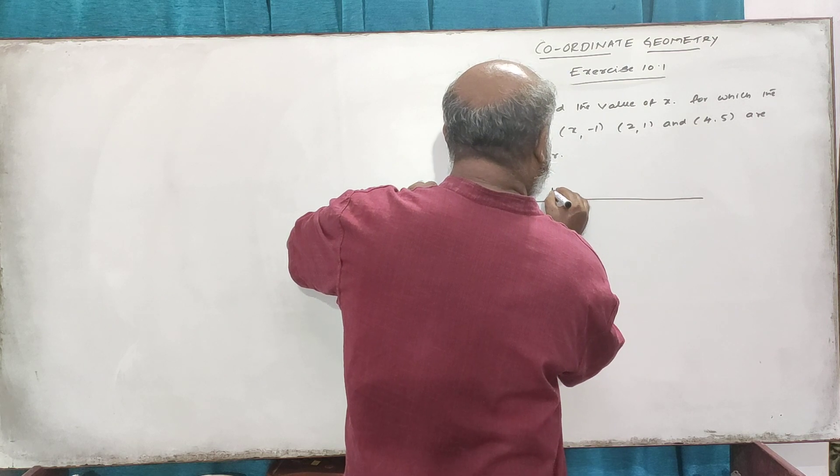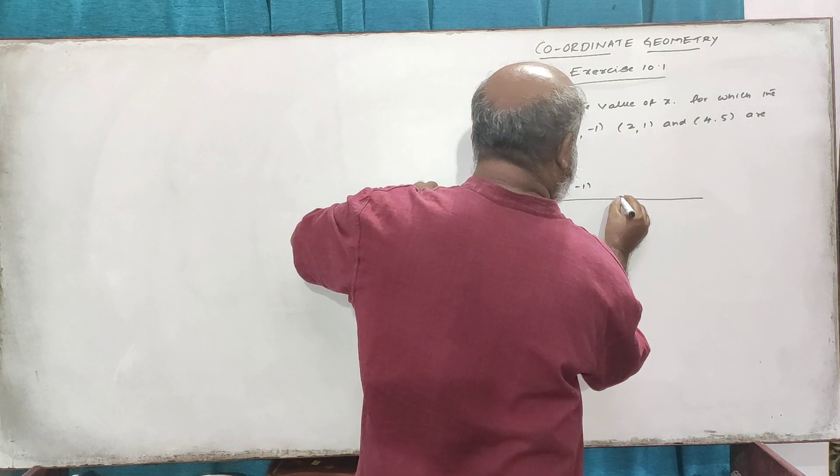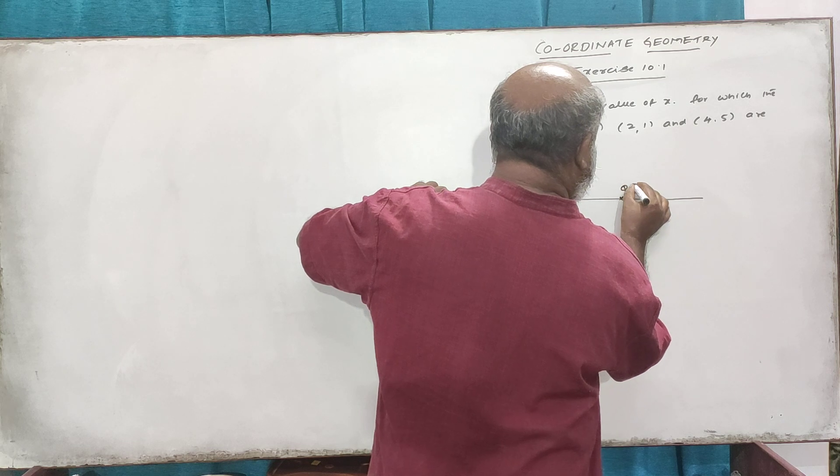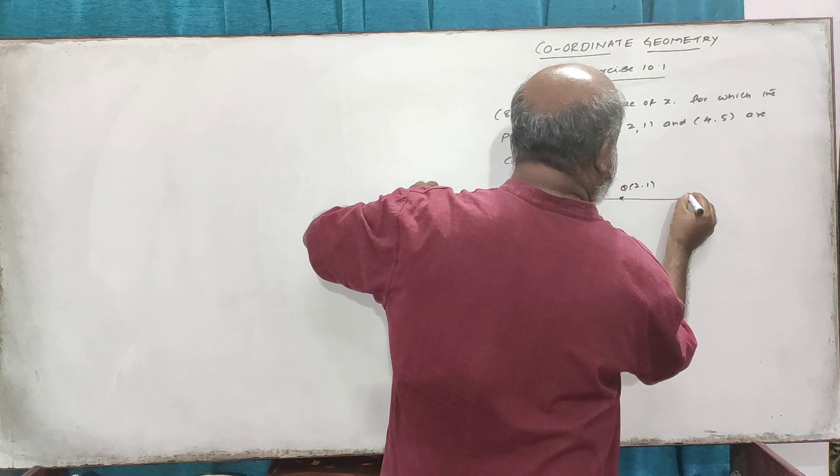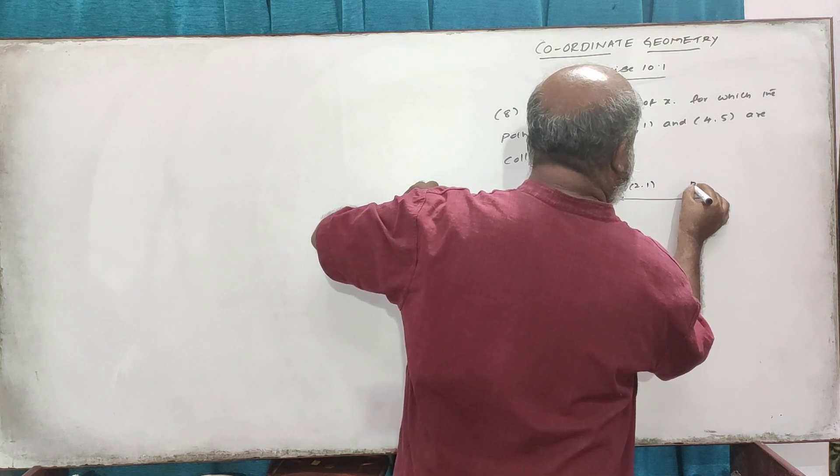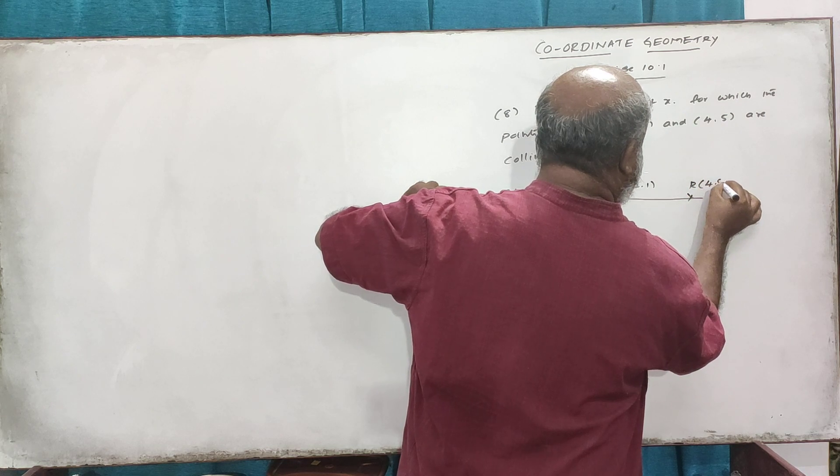We have point P at coordinates x comma minus 1, point Q at coordinates 2 comma 1, and point R at coordinates 4 comma 5.